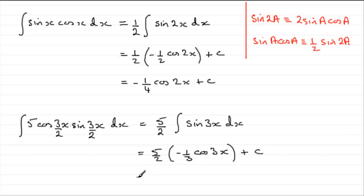So, what we need to do now is just multiply 5 over 2 with minus a third, and you get minus 5 over 6. Minus 5 over 6 cos of 3x, then plus c.